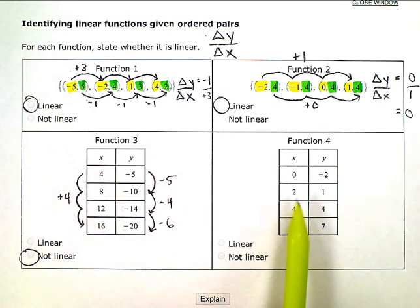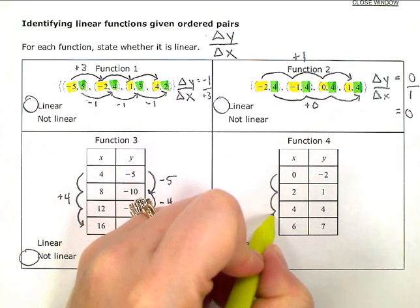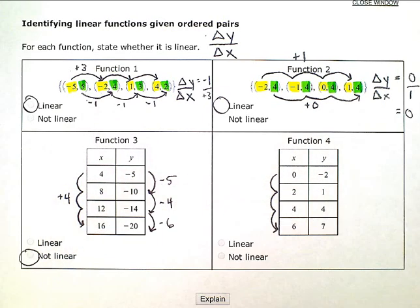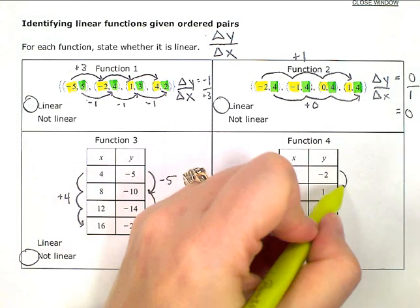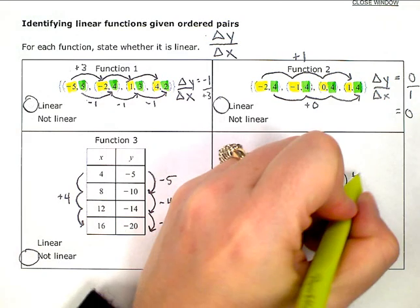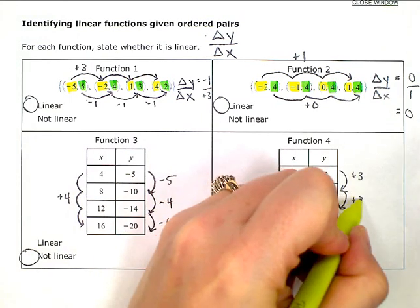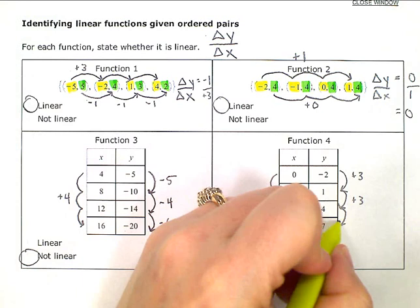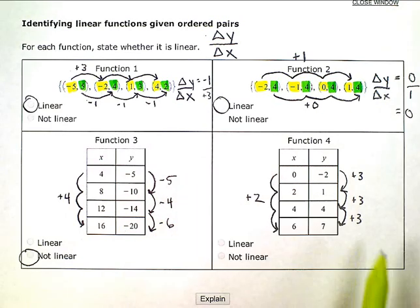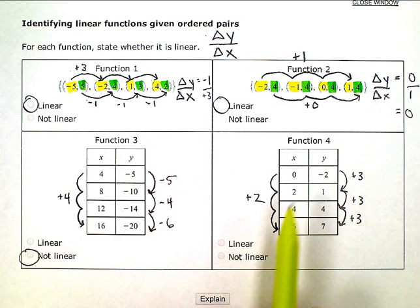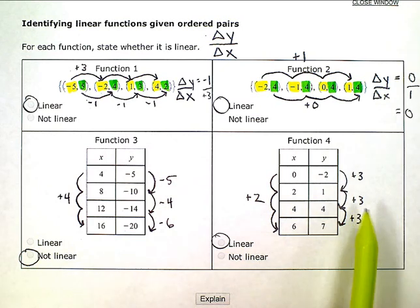Now again, this last one, my x's, I have a consistent interval here of plus 2. My y's, to go from negative 2 to 1, that's a plus 3. From 1 to 4 is another plus 3. And from 4 to 7 is another plus 3. So since my y's are changing consistently when my x's change consistently, this one is linear. If they asked for the slope, my slope would be 3 over 2 or 3 halves.